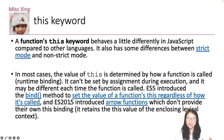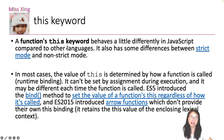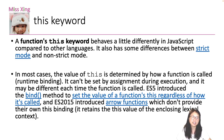ES6 also introduced arrow functions. Arrow functions don't have their own `this` keyword — they inherit it from the surrounding environment. The reason `this` is complicated in JavaScript is because JavaScript has standalone functions, whereas Java only has methods. In Java, you always call methods using an object, so `this` always refers to that object. But in JavaScript, you can call functions in different contexts, which is why it becomes complicated.